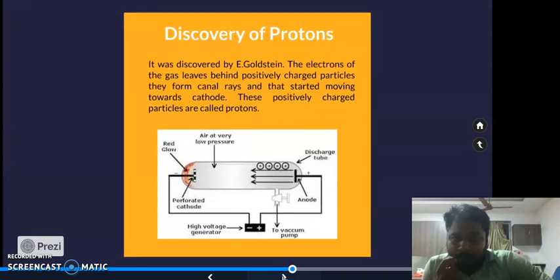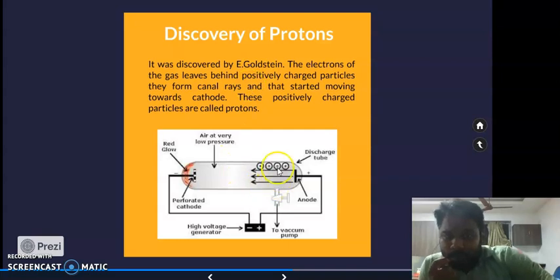We also have protons, which were discovered by a scientist called Goldstein. He used the same experiment but reversed the process. On the anode side, there is a ray generated that goes to the cathode side, and these rays are called canal rays.